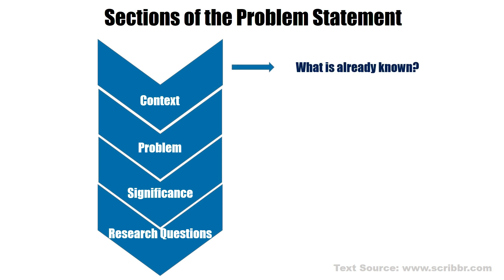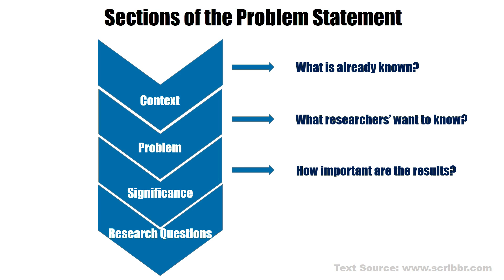By the way, yung context is about what is already known — about circumstances that somewhat lead you to undertake or to investigate a certain issue. Later on, I will show you some examples for each of the sections of the problem statement. We have also what researchers want to know — yun yung problem. And then the significance — how important are the results. These are the guide questions na gagawin per sections of the problem statement. And we have research questions — what will you do to find out — so that you can investigate this certain research.